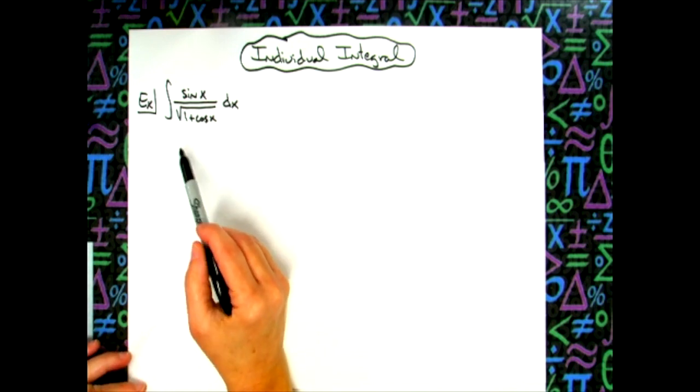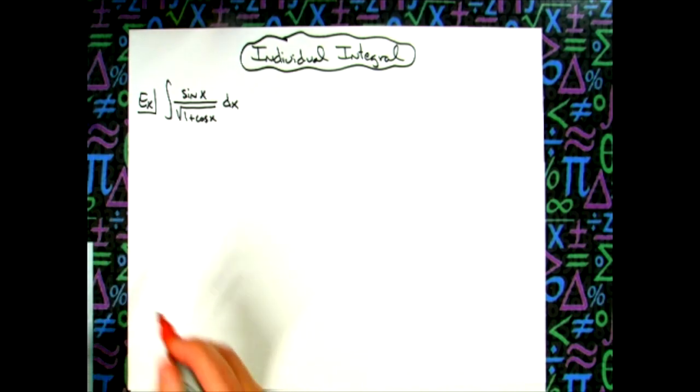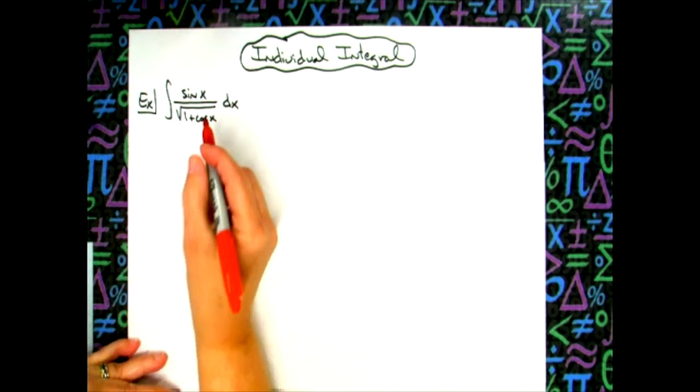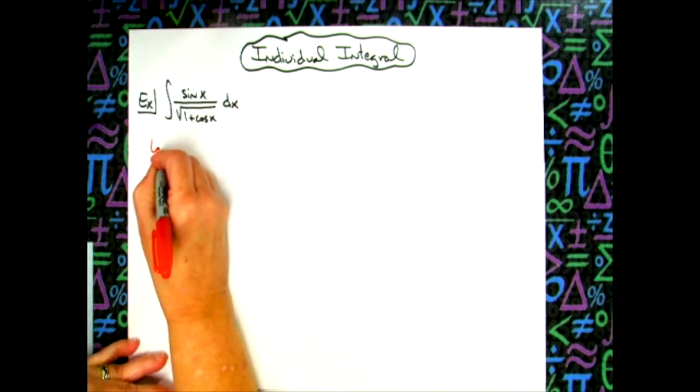This is going to be a straightforward u substitution, the type of integral that would be found typically in a calc 1 class. We're going to start by letting our u be that 1 plus cosine x there in the denominator.